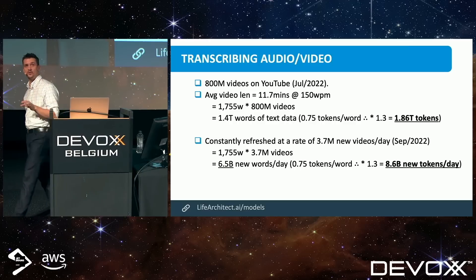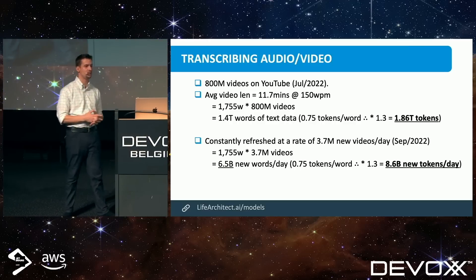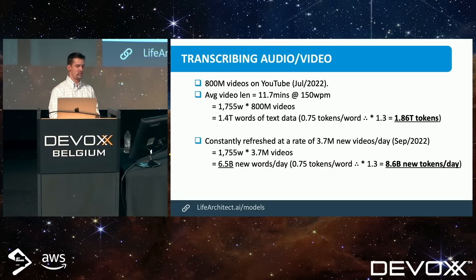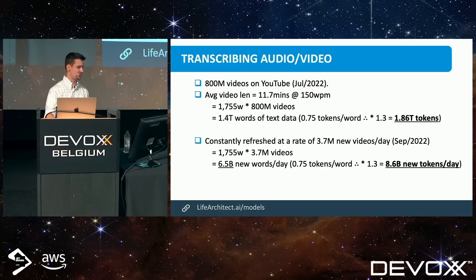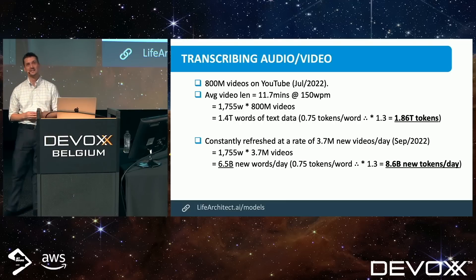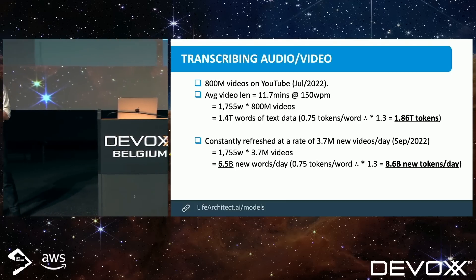YouTube is constantly refreshed. They talk about having 3.7 million new videos uploaded every day. That gives us about 6.5 billion new words a day, and if we tokenize that, we're looking at 8.6 billion tokens per day.